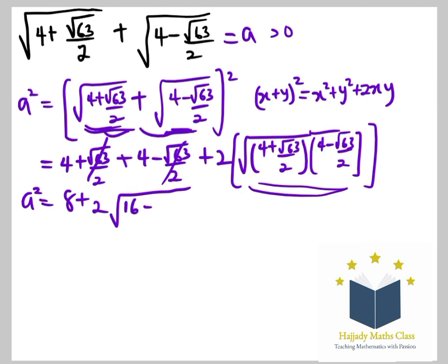If we multiply this out, this is still going to cancel this. I mean, the root 63 terms are going to cancel. So you're only going to have difference of 2 squares. 4 multiplied by 4, which is 16, and 63 over 2 multiplied by 63 over 2, which is going to be 63 all over 4.